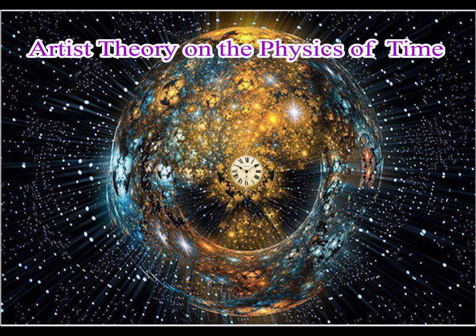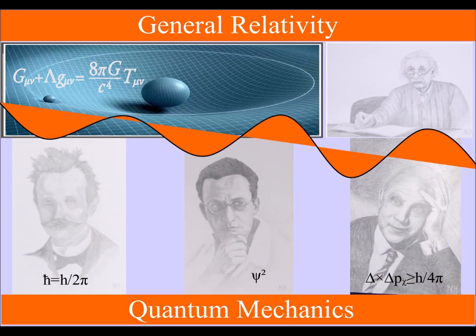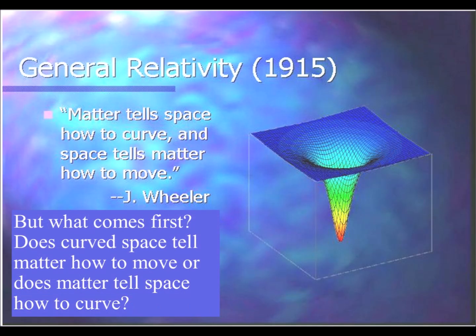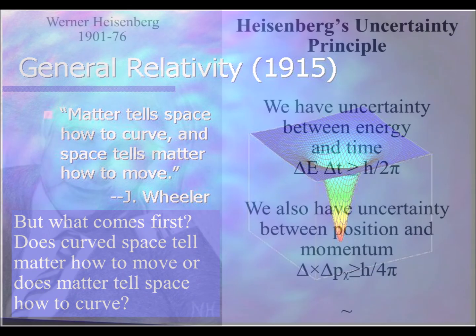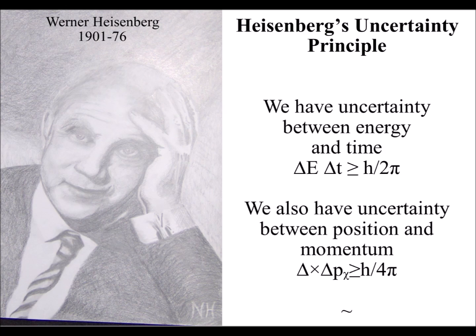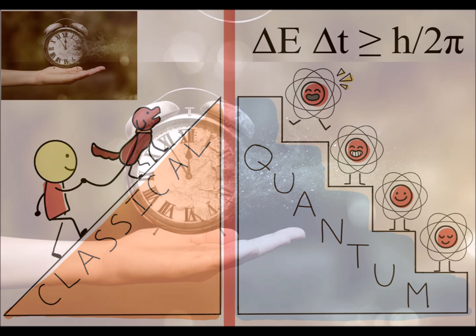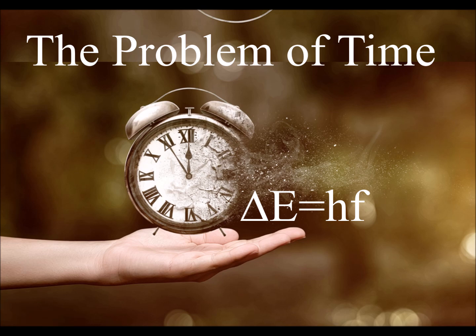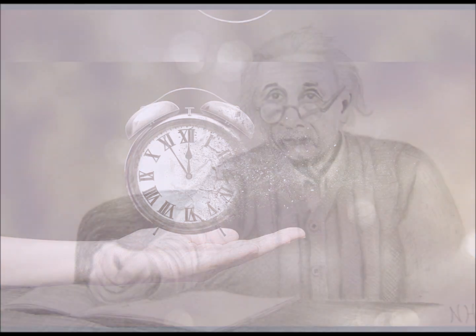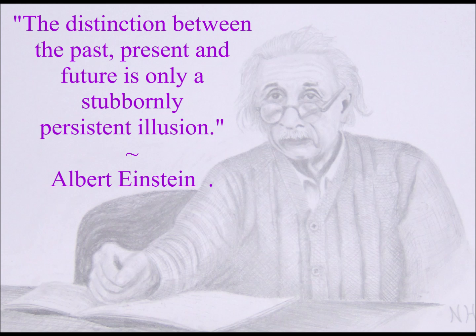The problem of time in physics is that in Einstein's general relativity, time is built in at a fundamental level to form space-time. On the other hand, time in quantum physics is very different. For example, we have uncertainty between energy and time. Both ways of dealing with time make sense on their own, but they don't fit together in physics. This is called the problem of time. The easiest way around this is to say that the feeling of time passing by is just an illusion.